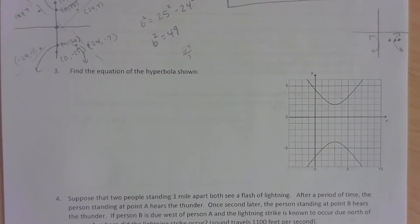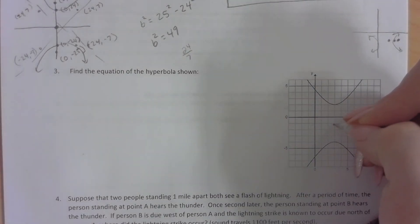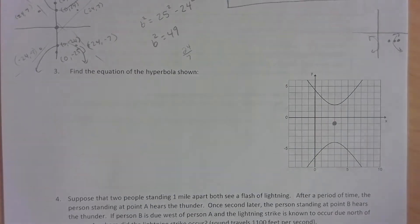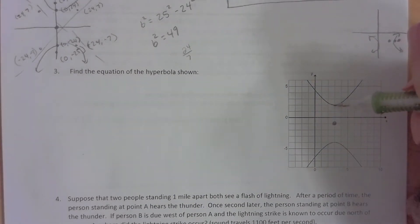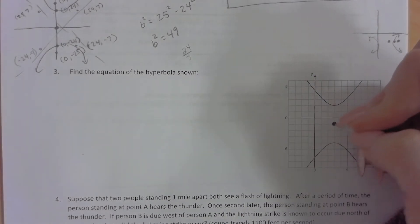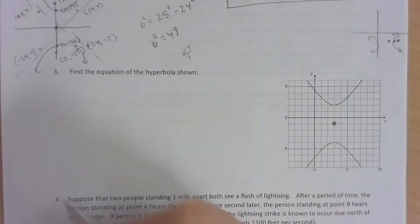All right, number 3 wants us to find the equation of the hyperbola. So we're going to have to figure out the center here. So it kind of looks like the center is here, but let's double check that that's in the center. So this is up 1, 2, 3, down 1, 2, 3. Okay, so there's our center at negative 3, negative 1.